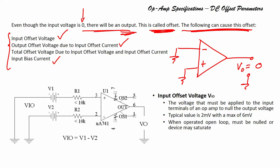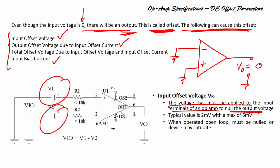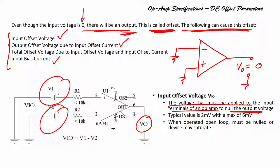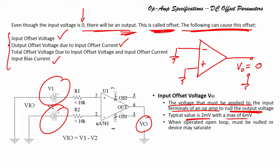Input offset voltage is the voltage that must be applied to the input terminals of the op-amp to null the output voltage — to make the output voltage 0. As you can see here, we apply a small input voltage so that the output becomes 0. Typically the value is 2 millivolts and the maximum value is 6 millivolts.